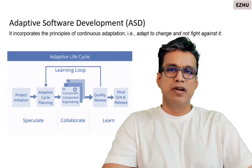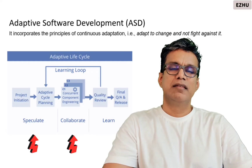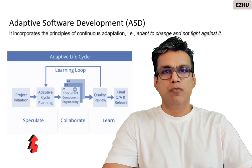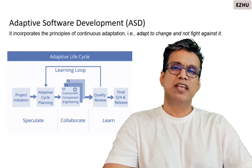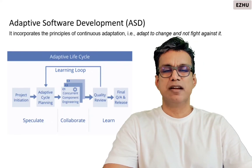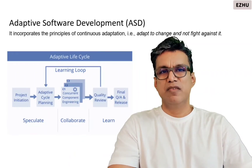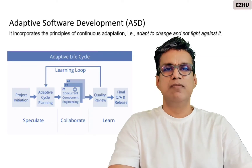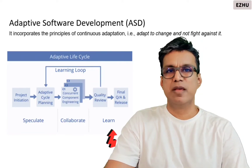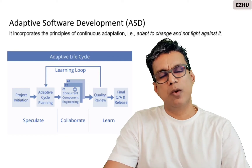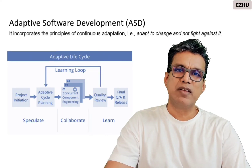The Adaptive Software Development framework is based on the principle: adapt to change and don't fight against it. There are three main stages. The first stage is speculation, where the different teams discuss the key goals and objectives of the project, the key features to be developed, and the limitations and risks. The second phase is collaboration, where teams come together and any learning is shared across teams so that others do not need to learn it from scratch. The last phase, the learn phase, is very important — lessons learned, what went well, what did not go well, all positives and negatives are captured, which is going to be useful for the effectiveness of the project.